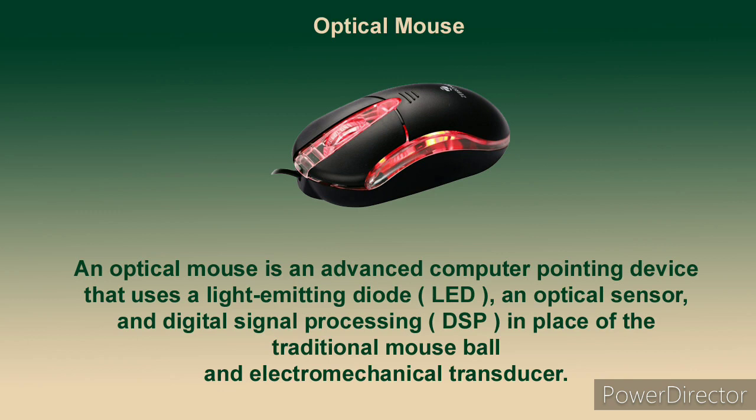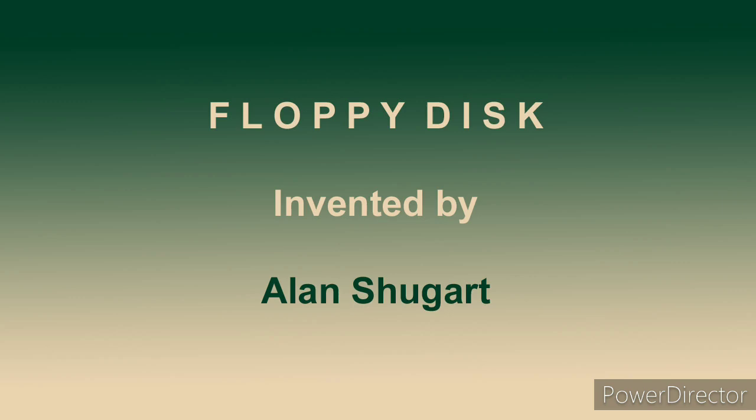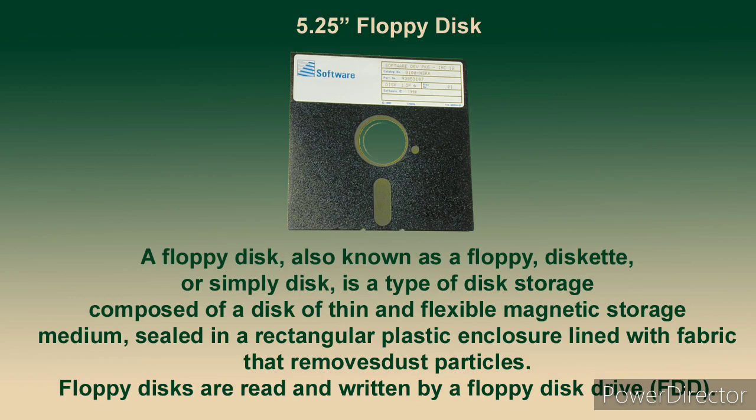The floppy disk was invented by Alan Shugart. It is a type of storage disk composed of a thin and flexible magnetic storage medium. The size of the disk is 5.25 inches with a maximum capacity of 1.2 MB.